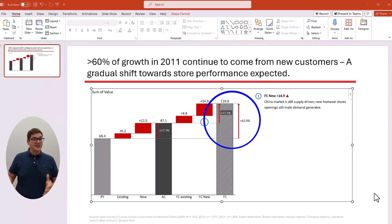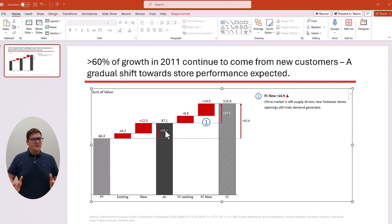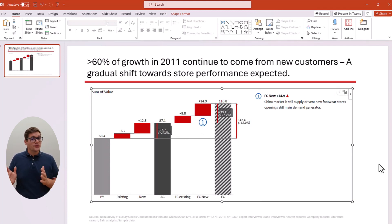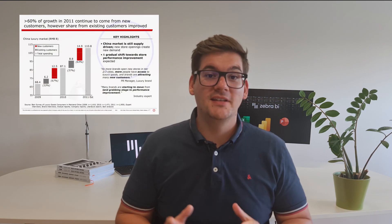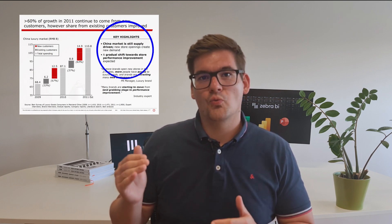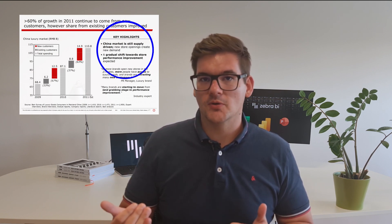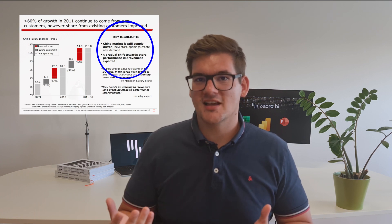Another welcome addition Zebra BI adds automatically are different highlights — automatically calculated to give your data additional context, showing the exact magnitude of growth in the market. Data labels can also be switched from absolute to relative with a single click to emphasize your point further. The second improvement I think we can make is to the key highlights.